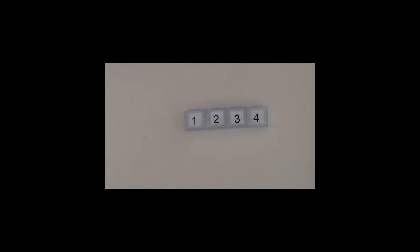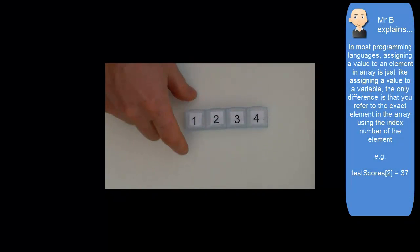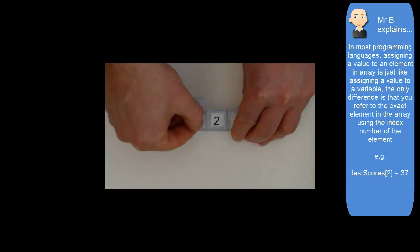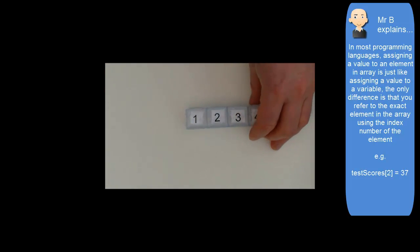For example, if I wanted testScores[1], which is the first element, I would use testScores in square brackets one, and I could place the value 47 inside. Or testScores[2], and place the value 37 inside.